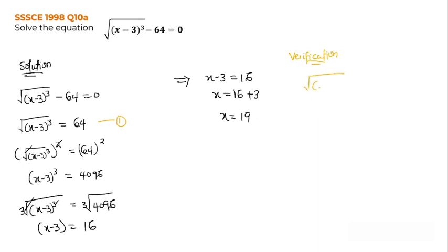So we have the root of (x minus 3) cubed minus 64 equals 0. Let's look at that. Now when x is 19, we said x is 19, that was what we found. We have the root of (19 minus 3) cubed minus 64 equals 0.